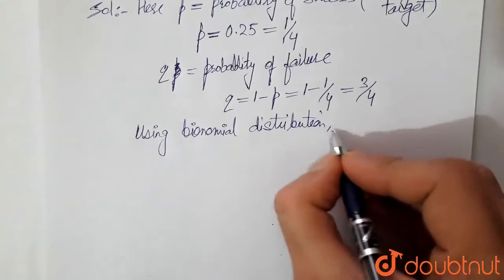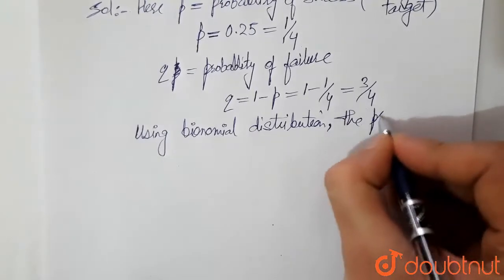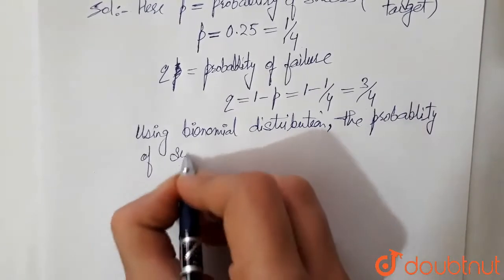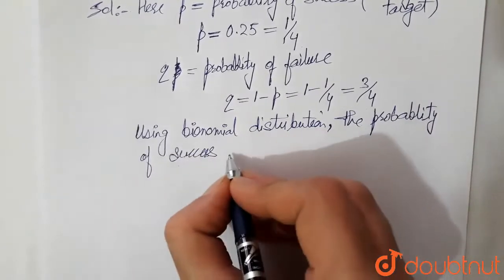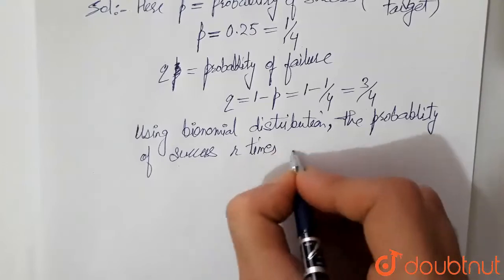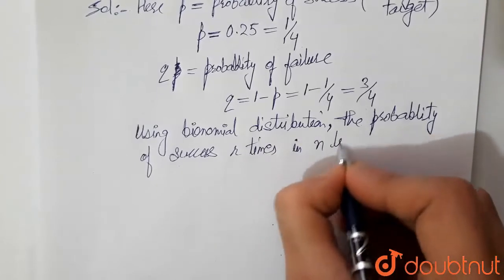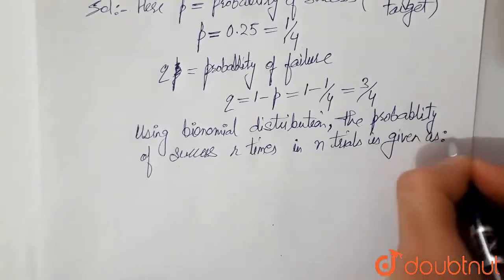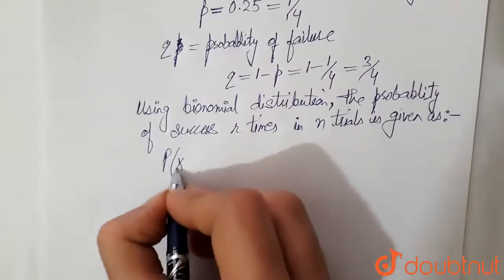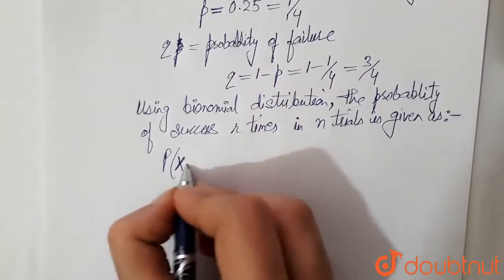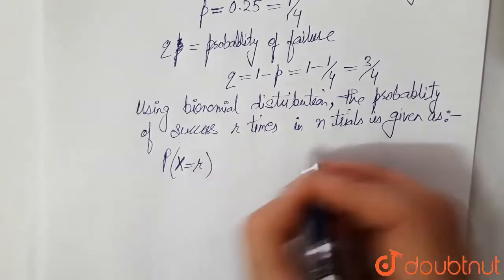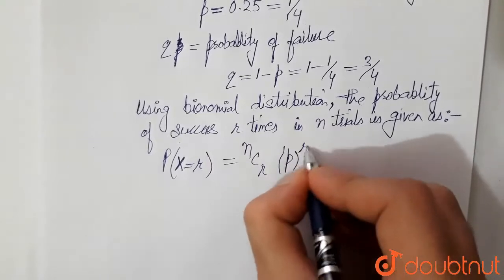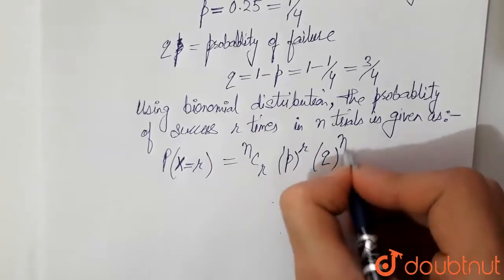Binomial distribution says that the probability of success r times in n trials is given as nCr, p to the power r, q to the power n minus r.